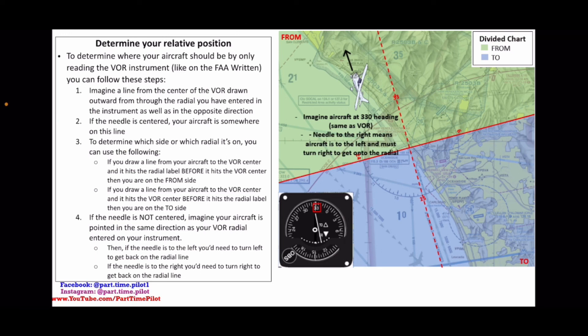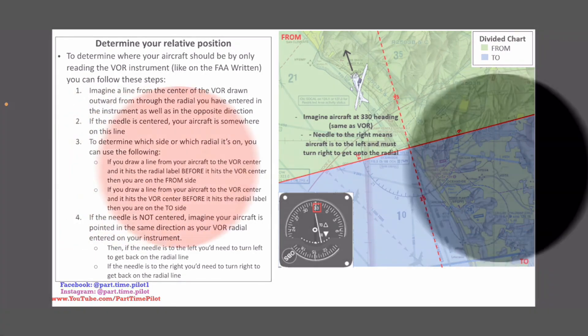That's been a lot. We went over the TO/FROM and how to determine which side is FROM and which is TO. We talked about the needle and how to determine where your aircraft is whether the needle is centered, left, or right. Then we talked about combining the TO/FROM indication with the needle to determine your aircraft's location. In the next video, we'll do some examples to further ingrain this and help with your understanding of VORs.